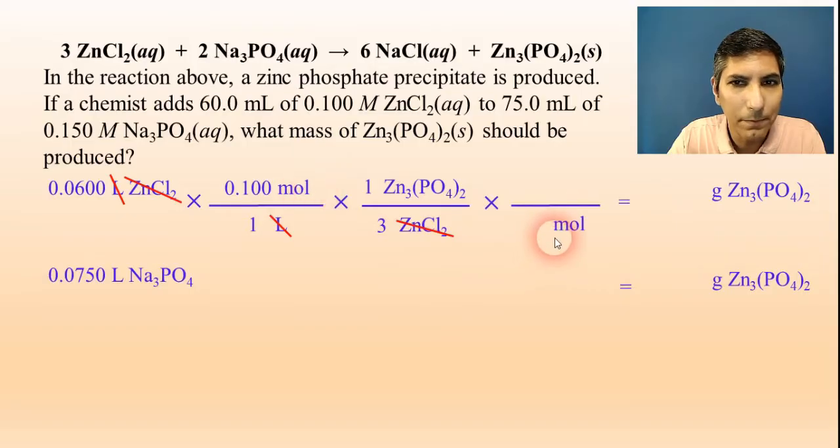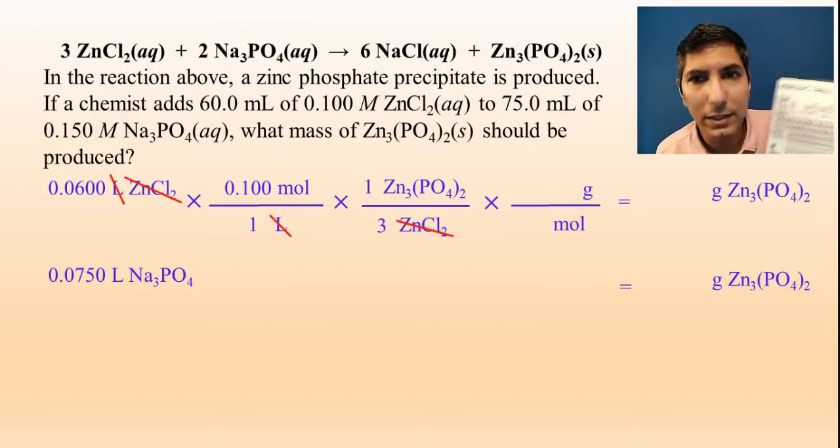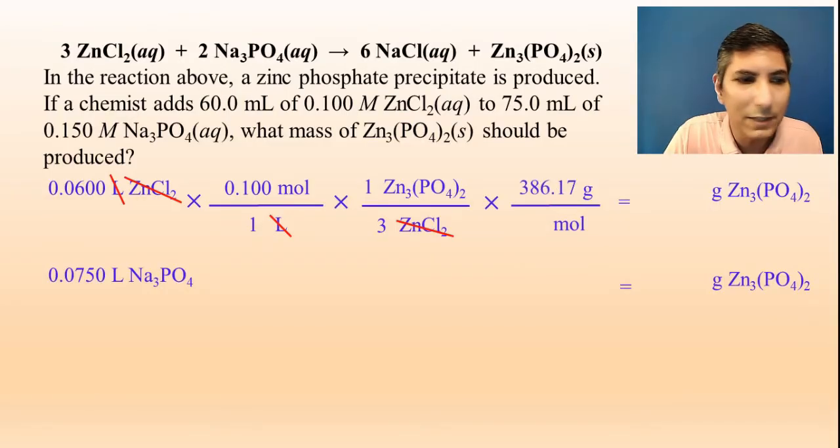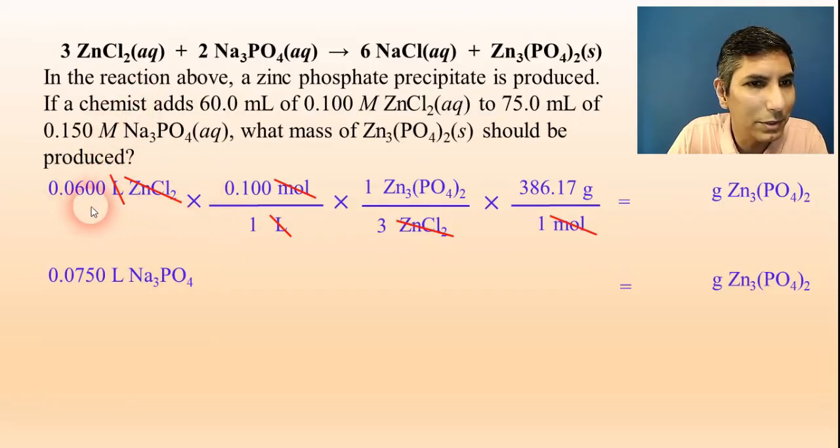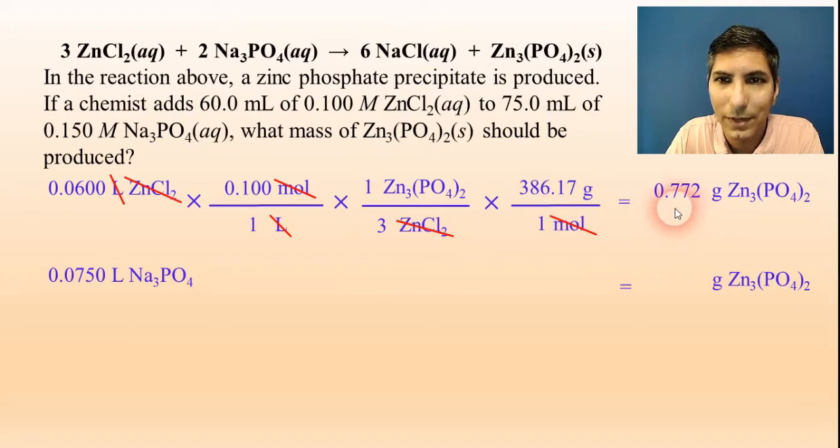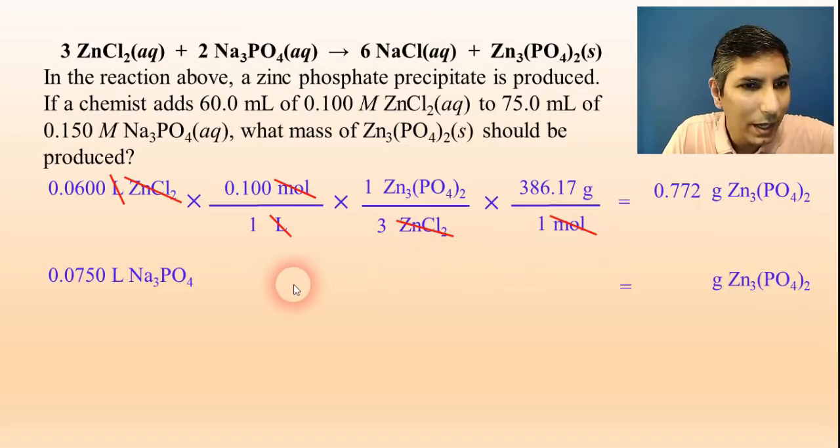Now I have to convert to grams. Moles on the bottom, grams on the top. If I take three zincs, two phosphoruses, and eight oxygen atoms and add those together, I have a molar mass of about 386.17 grams per mole. And I can cancel moles and do some multiplication and division. So, 0.06 times 0.1 divided by 3 times 386.17 gets us 0.772. Now, in a limiting reactant problem, we have to do this twice.